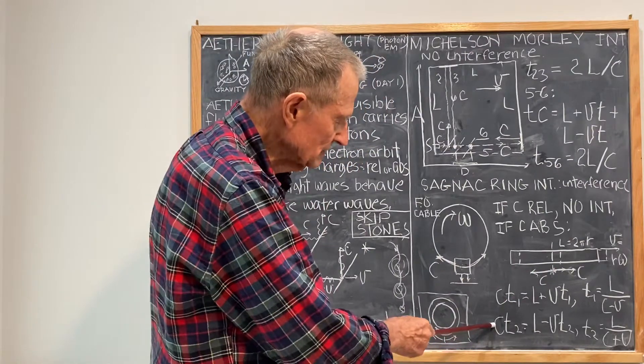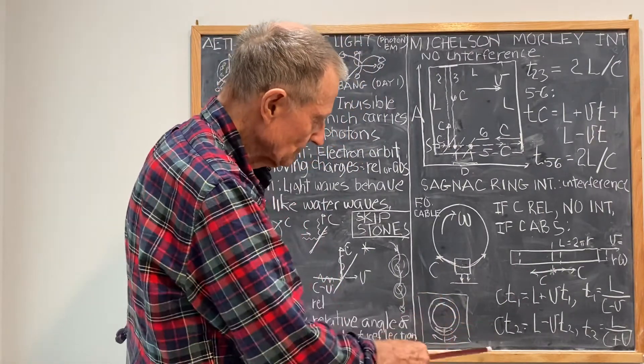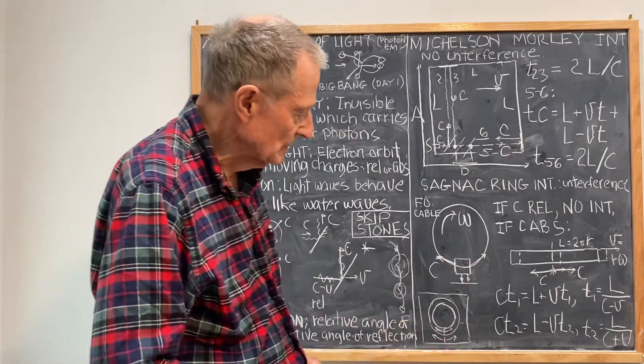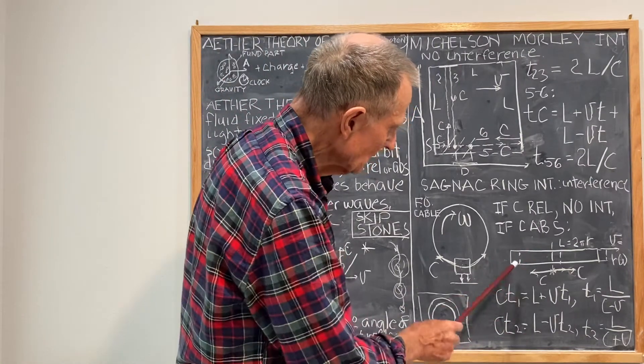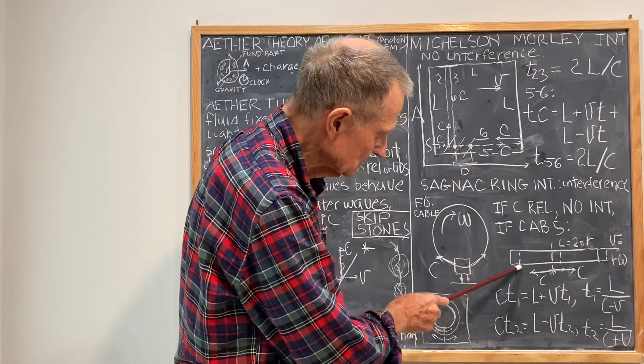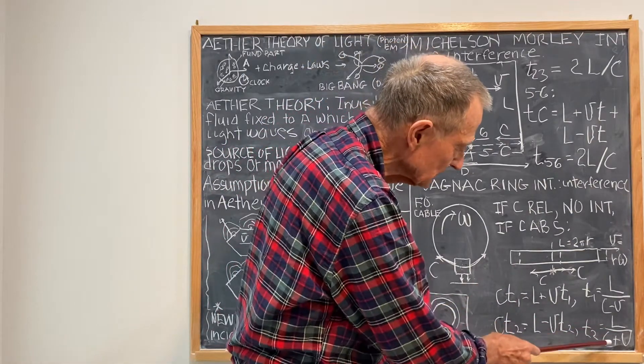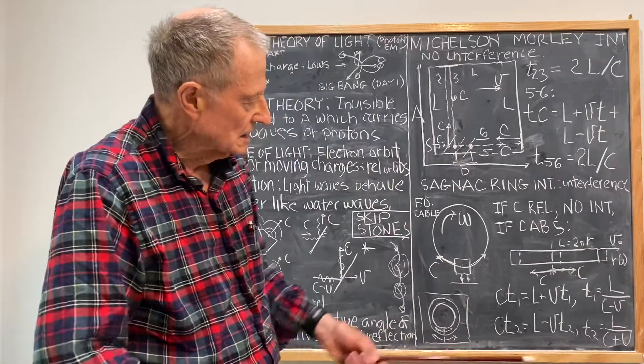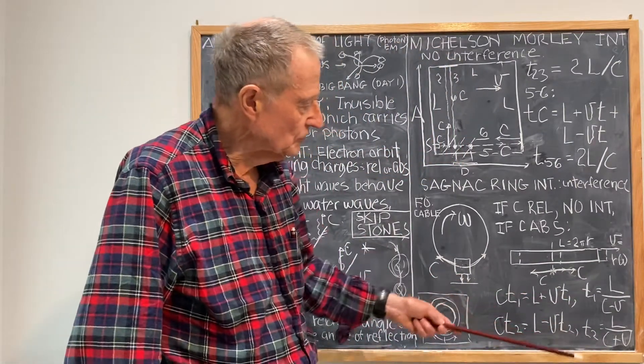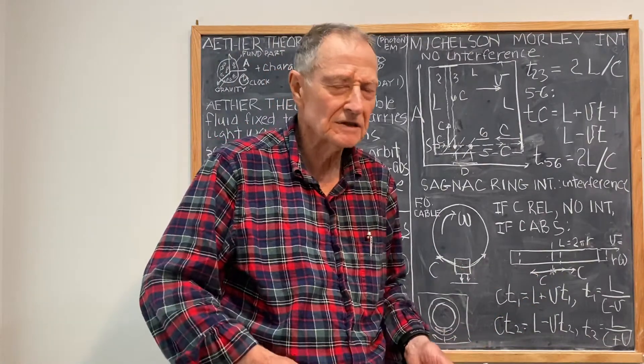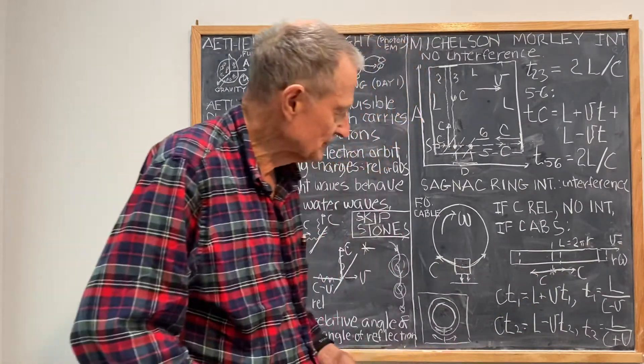For the other direction, you have that C, the speed of light, absolute speed of light, and the total time of travel is equal to the distance covered, which is L minus, in the meantime, this is moved into distance VT2, to which you get T2 is L over C plus V, and then T1 minus T2, and the difference in the distance covered is the classic result that you can find all over the internet.